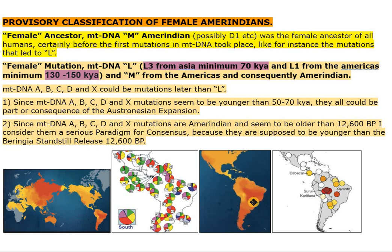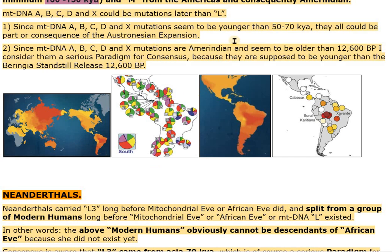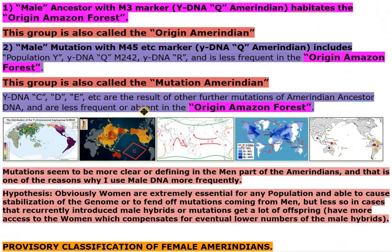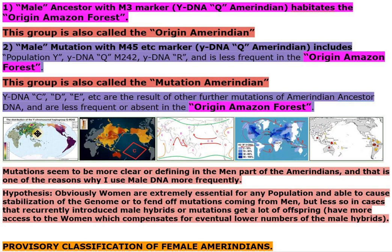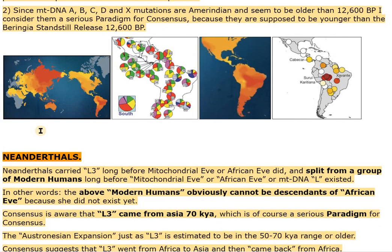mtDNA A, B, C, D and X could be mutations later than L. 1. Since mtDNA A, B, C, D and X mutations seem to be younger than 50–70 kya, they all could be part or consequence of the Austronesian expansion. 2. Since mtDNA A, B, C, D and X mutations are Amerindian and seem to be older than 12,600 BP, I consider them a serious paradigm for consensus, because they are supposed to be younger than the Beringia standstill release at 12,600 BP.